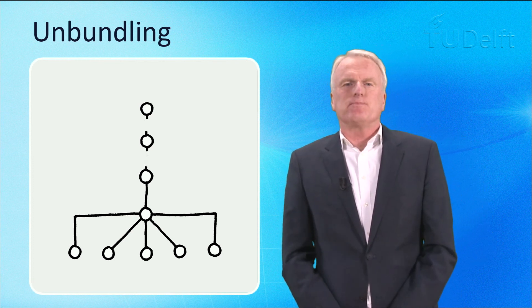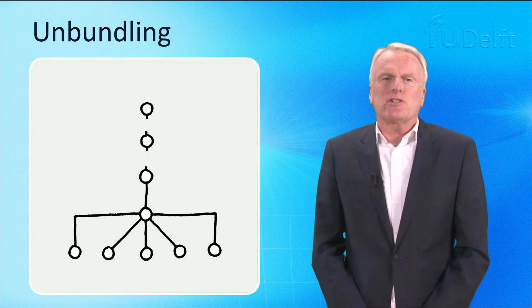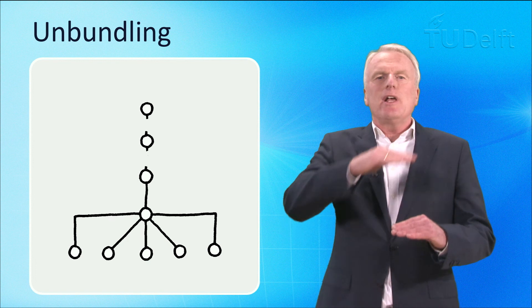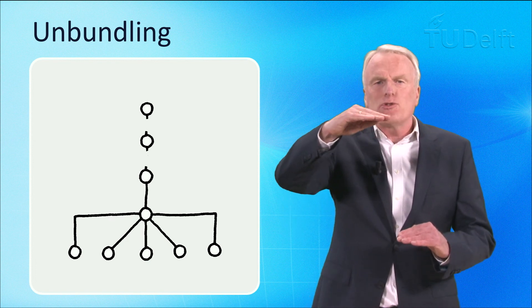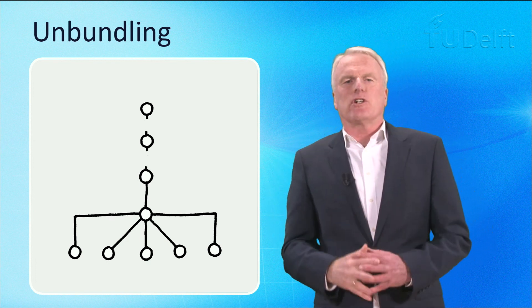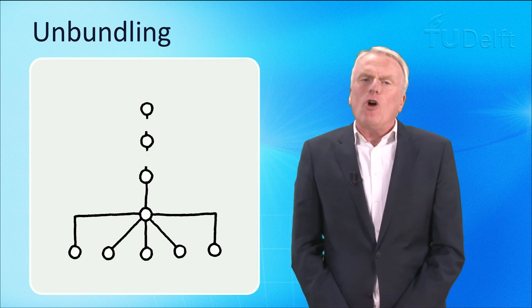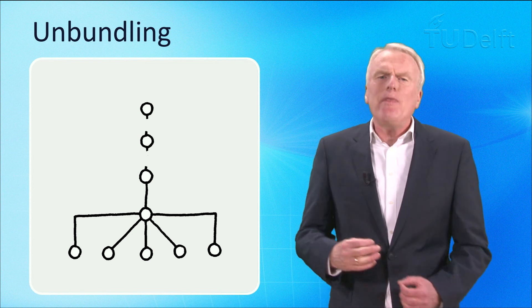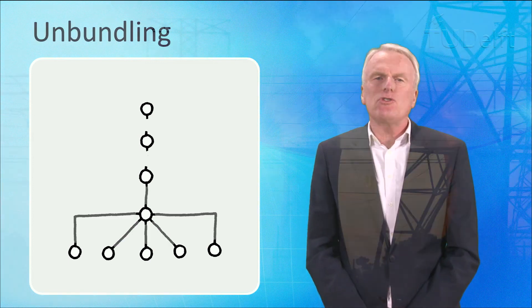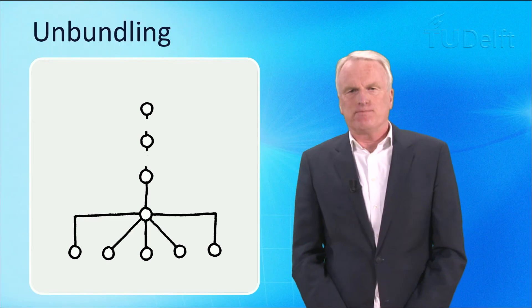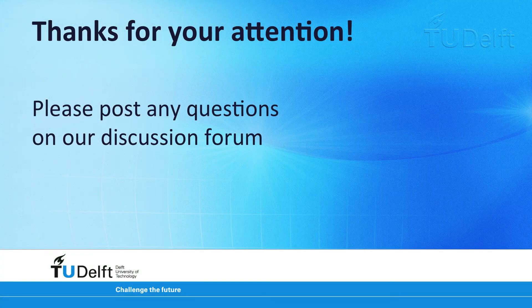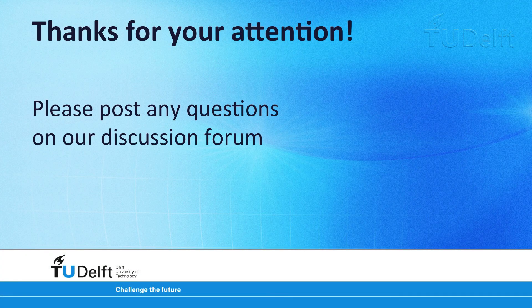Vertical decoupling. In many infrastructures a separation was applied between the operation of the infrastructure and the operation of the services provided over the infrastructure. An example is railway companies, where the operation of the railways and the operation of train services are usually separated. Such separations have also been implemented in the telecom industry and, to a lesser extent, in the energy sector.